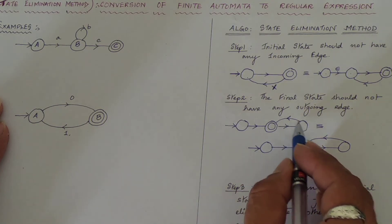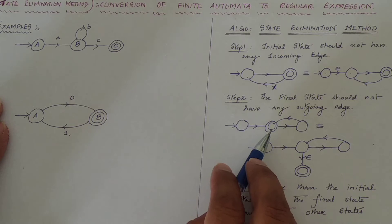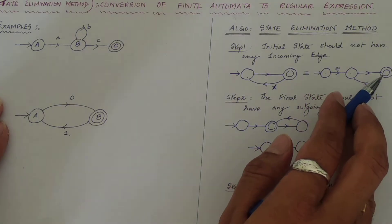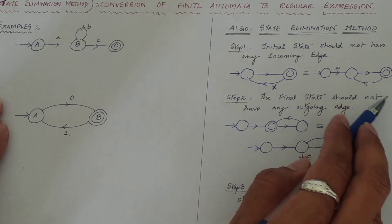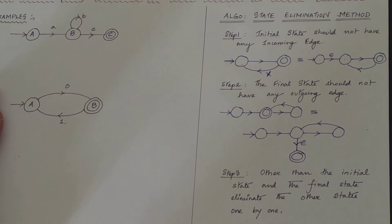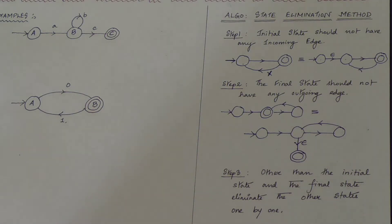The same structure will remain for this state, but since it was a final state, you make it a normal state and take an epsilon transition to a new state that becomes the new final state. Just check these two scenarios first — then, apart from the initial and final states, eliminate the other states one by one until you are left with just an initial state and a final state with one transition. Let us check with an example.